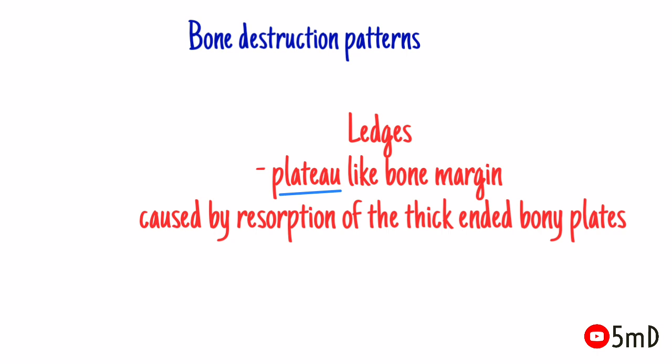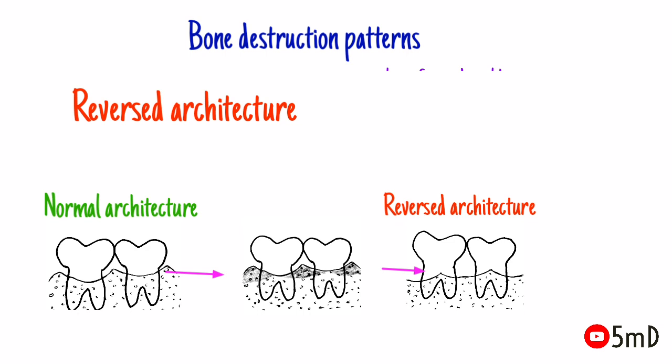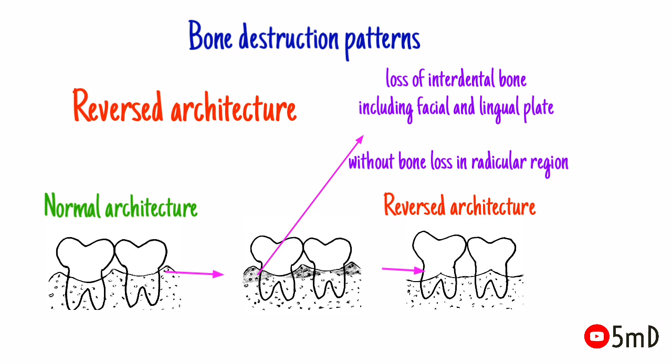Ledges are plateau-like bone margins caused by the resorption of thickened bony plates. There is a common term known as reversed architecture. Such defects are produced by loss of interdental bone, including facial and lingual plates, without the loss of radicular bone, resulting in the reversal of the normal architecture.